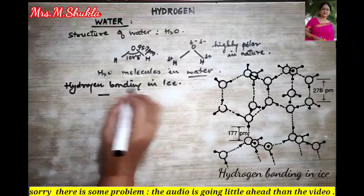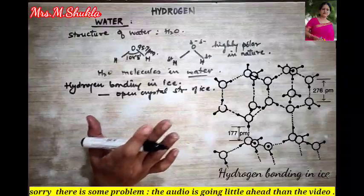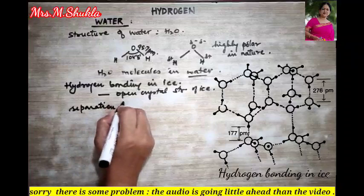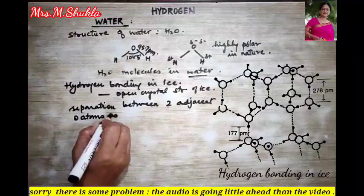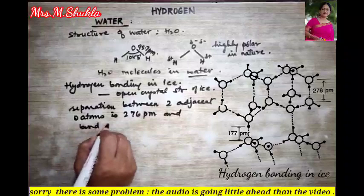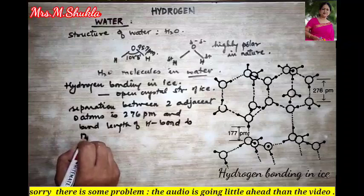In the open crystal structure of ice, the separation between two adjacent oxygen atoms is 276 pm, and the bond length of the hydrogen bond is 177 pm.